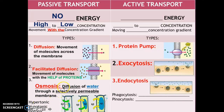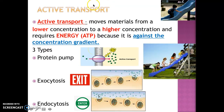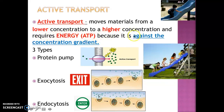Osmosis is the diffusion of water through a selectively permeable membrane, and there are different types which will be covered in the next lecture. Now we're going to talk about active transport. Active transport is the movement of materials from low concentration to high concentration — we're trying to go uphill. So we need to use energy, and that energy comes in the form of ATP. We're moving against the concentration gradient. There are three types: protein pump, exocytosis, and endocytosis.